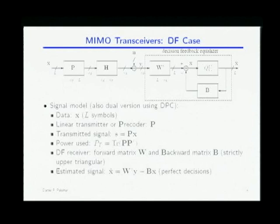The power used at the transmitter is still the trace of P times P-Hermitian. I'm going to assume perfect decisions in this feedback loop, as is commonly done. You don't know X; I'm going to assume perfect decisions so that I can use X instead.